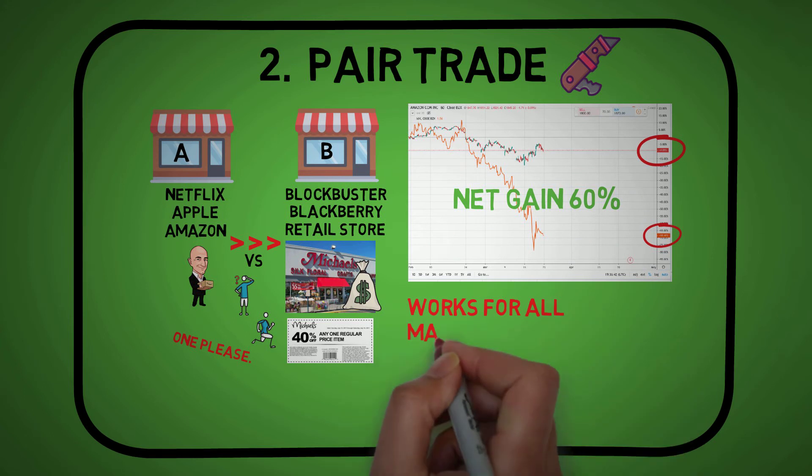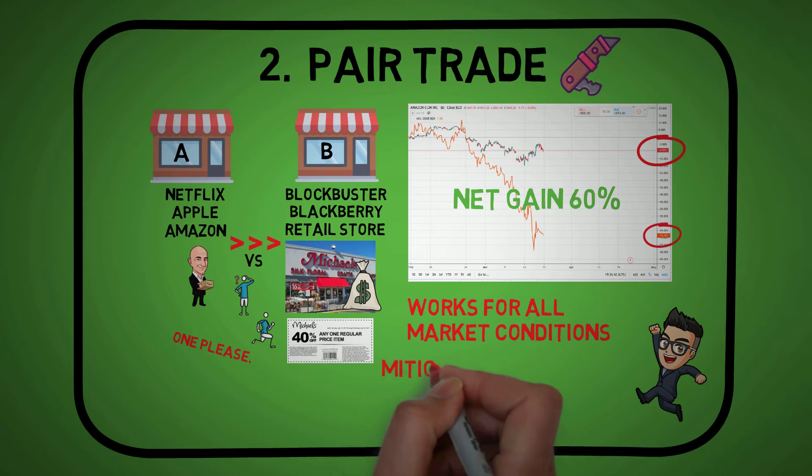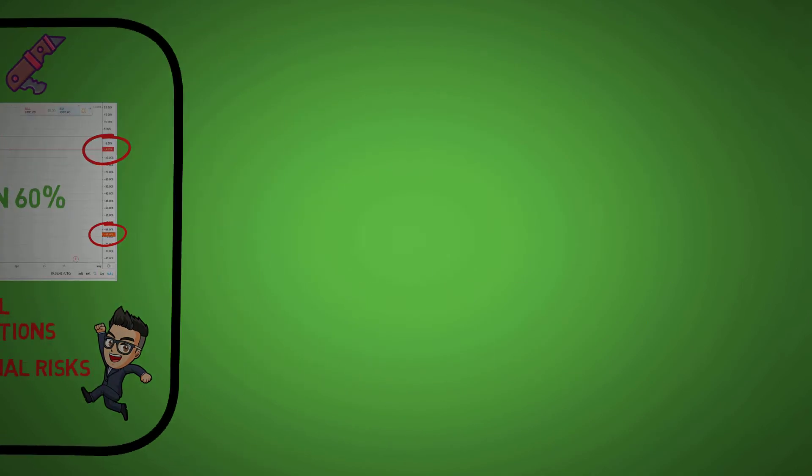Similarly in a bull run, the strong player will always outperform his weaker counterpart. There are lots of opportunities using this strategy pretty much in every industry. If your view is right, then you benefit from both sides while mitigating any external risks.